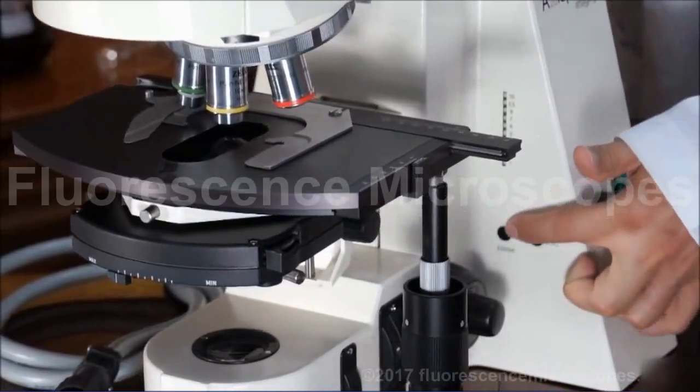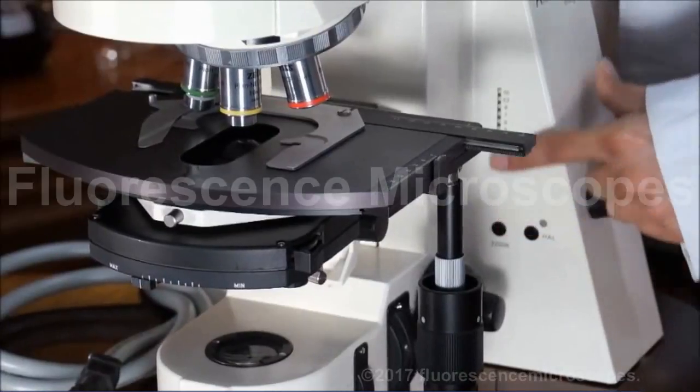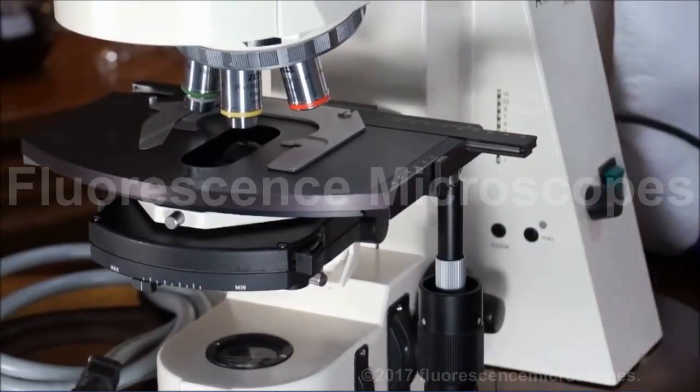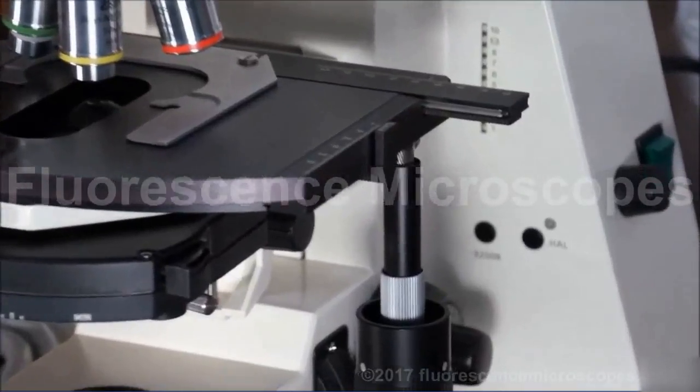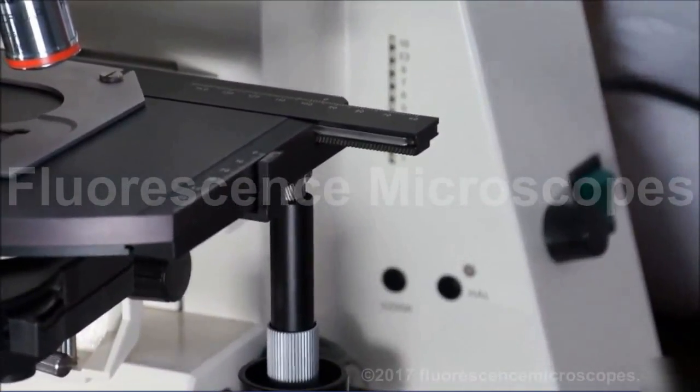You've also got a 3200K button. You press this and it gives a certain voltage and that's going to give you a daylight color.